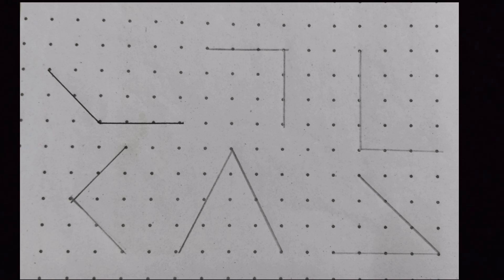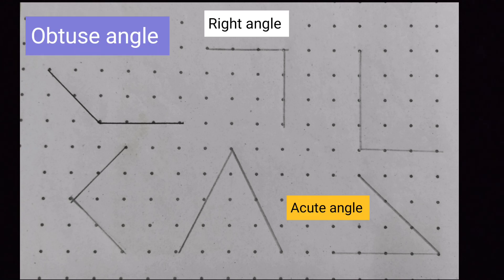Acute angles are less than a right angle. Obtuse angles are more than a right angle. And right angle is just like an L shaped angle. So these are the three angles that you would learn.